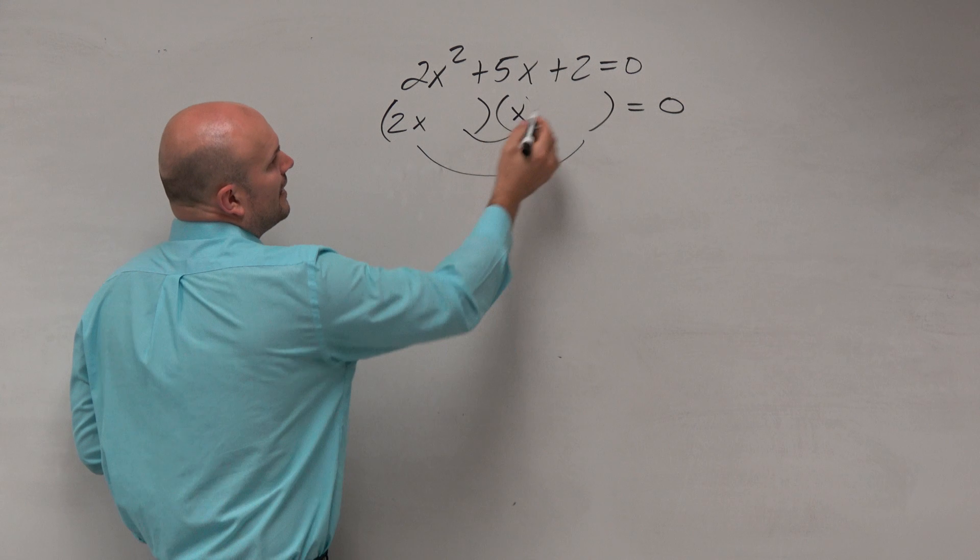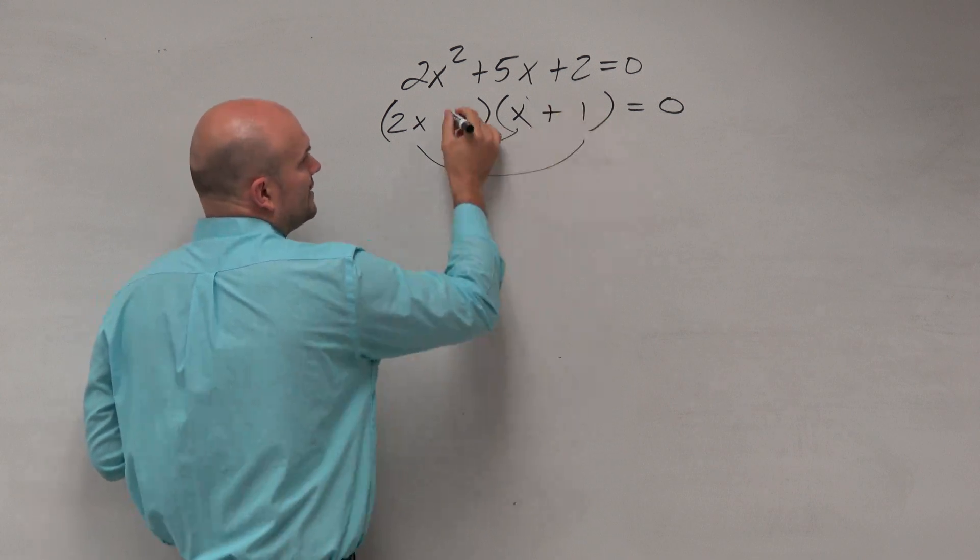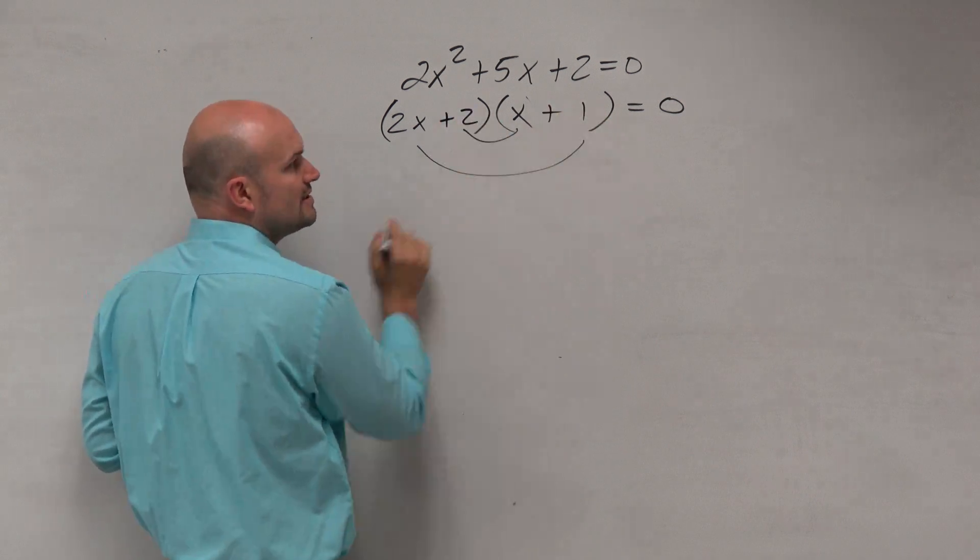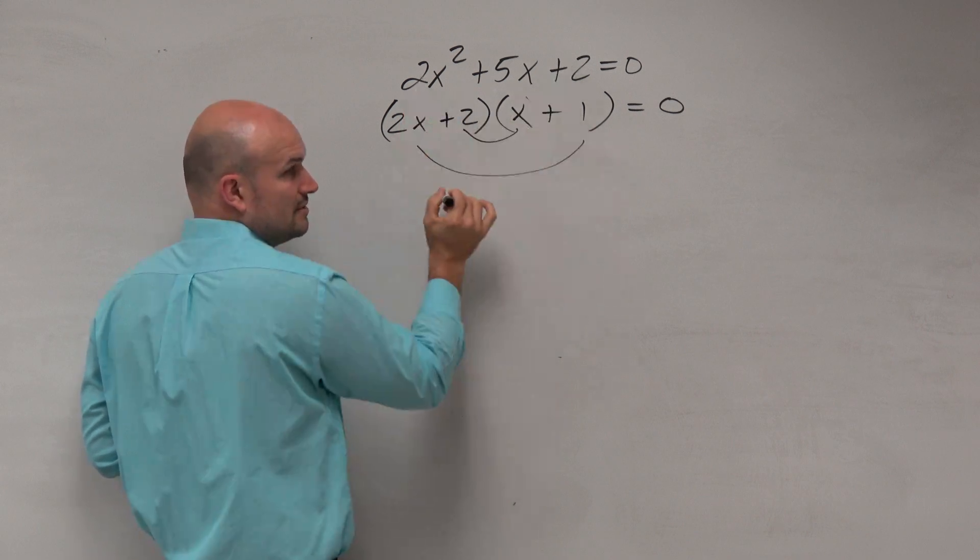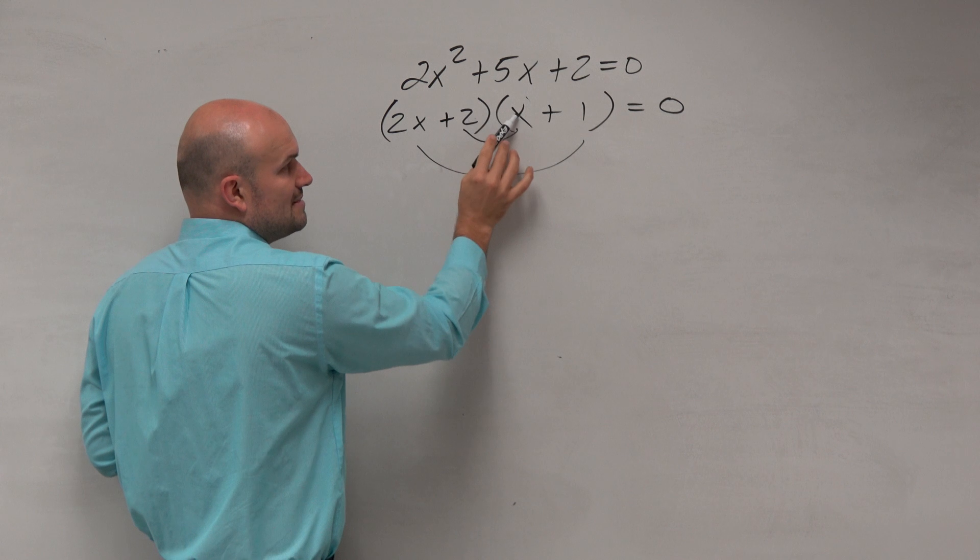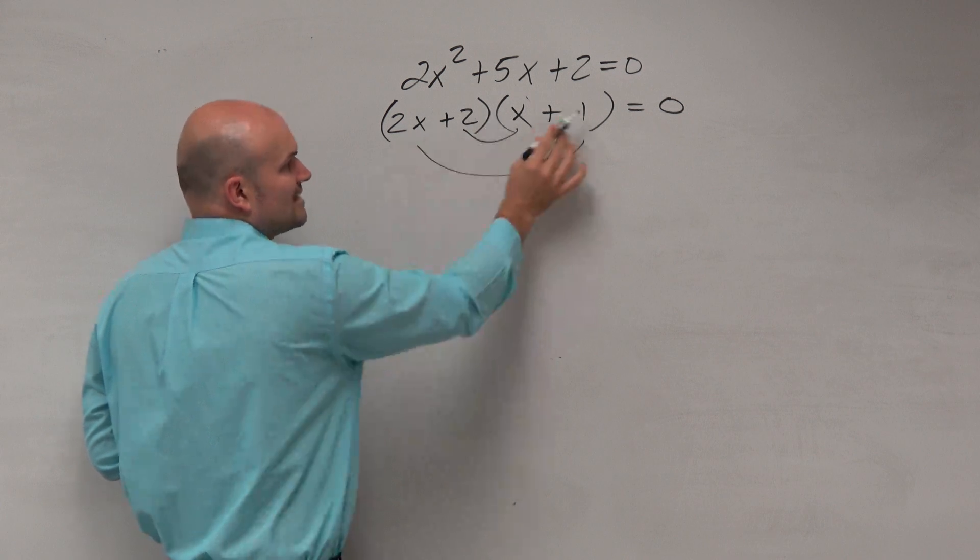So obviously, if I do a 1 here and a 2 here, what we notice is 2x times x is 2x squared, 2 times 1 is 2. However, 2 times x is 2x, and 2x times 1 is 2x. 2x plus 2x is 4x. We need it to be 5x.